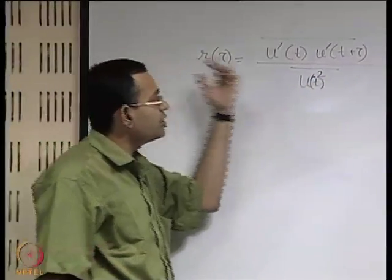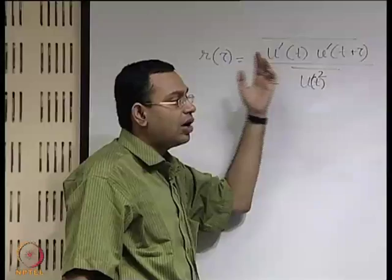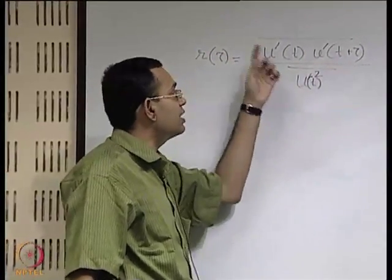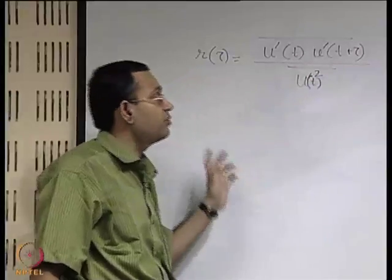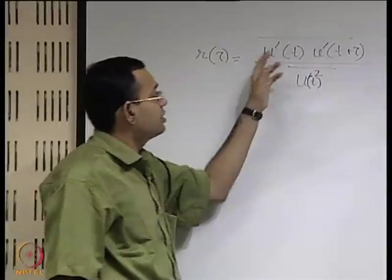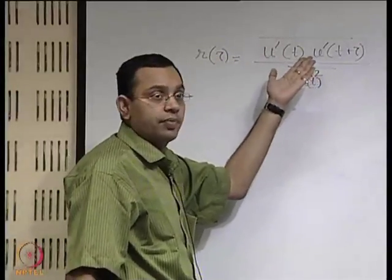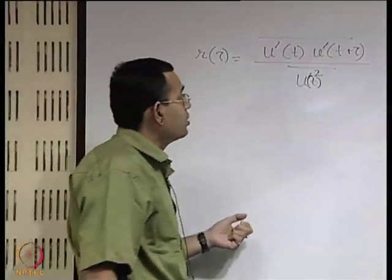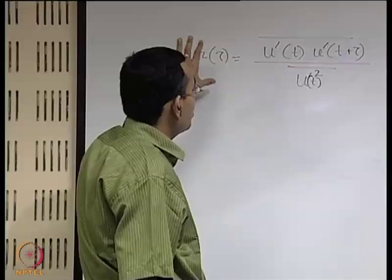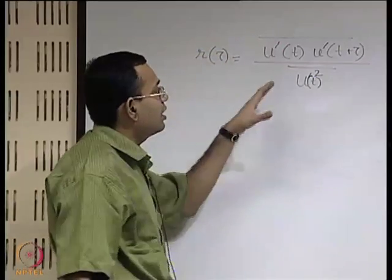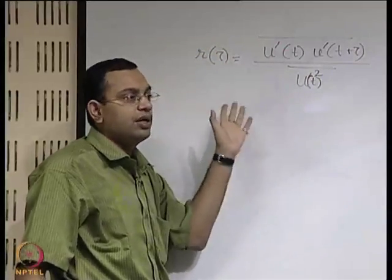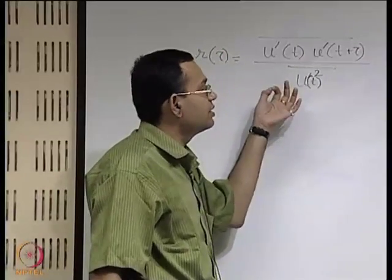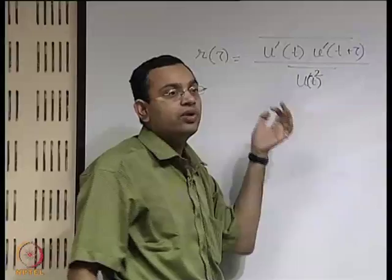Autocorrelation is based on the correlation between the outcome of the same random variable at different conditions: one at time t, another at t plus tau. Here the random variable is u prime, which is the fluctuation component of the velocity along x. This indicates how strongly the outcome of the random experiment in terms of the random variable u prime at a given point at two different instants of time are correlated.